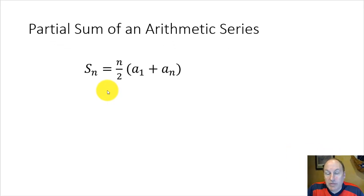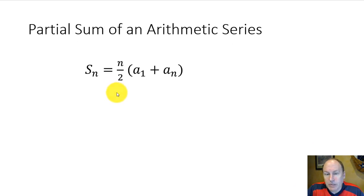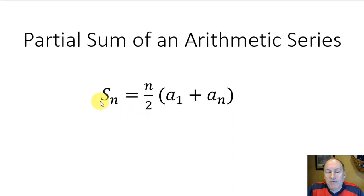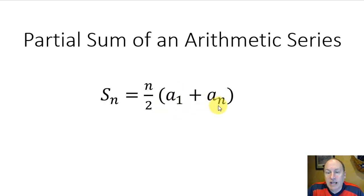Now we're going to focus on finding the sum, or partial sum, of terms in an arithmetic series. The formula for the sum of n terms is: S sub n equals n divided by 2 times the sum of a sub 1, the first term, plus a sub n, the nth term.